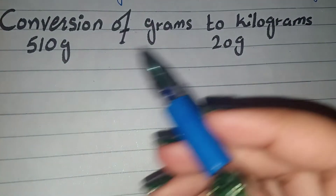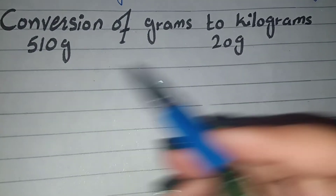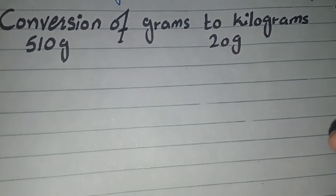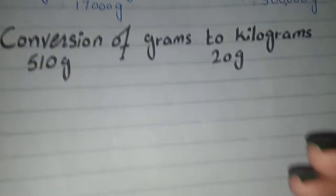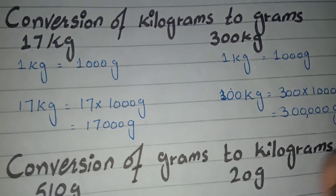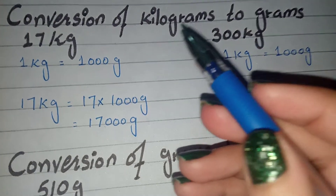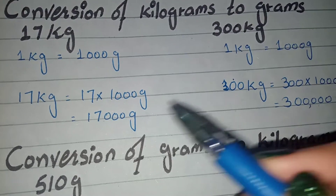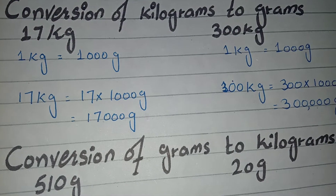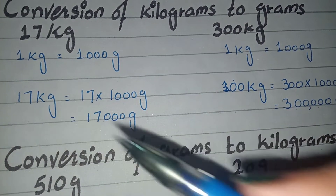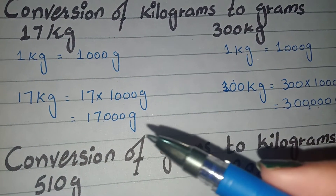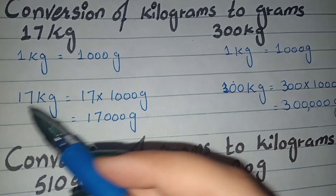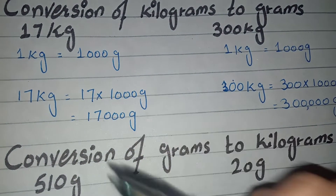We have written grams in short form G. We have to convert grams to kilograms, written as kg. When we convert grams to kg, we divide the number by 1000.